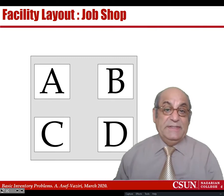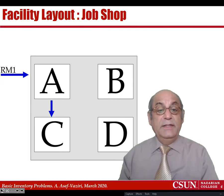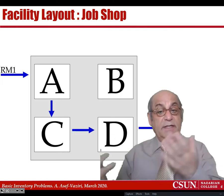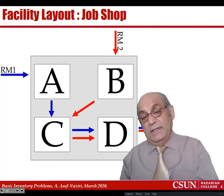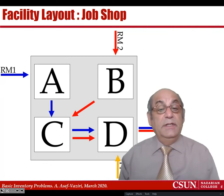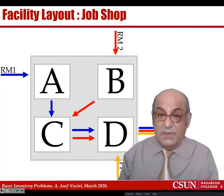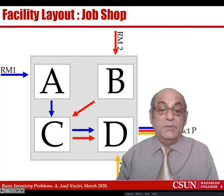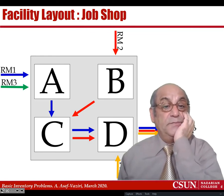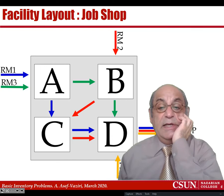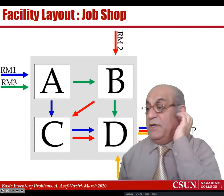For a pictorial representation: raw material one goes to department A, then C, then D, and is ready. Raw material two goes to B, then C, then D. A purchased part comes to D, and these three components together form one unit of product P. Product Q does not have the last part. It has raw material three, which goes to A, then B, then D, and is combined with raw material two to form product Q.